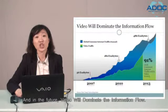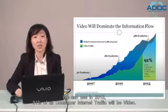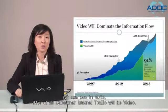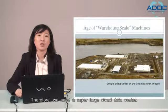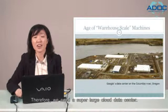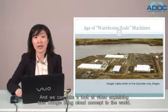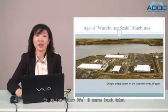In the future, video will dominate the information flow. In 2013, 91% of all consumer internet traffic will be video. Therefore, we need a super large cloud data center. This is an example of a data warehouse of Google. We can take a look at a video explaining how Google brought cloud concepts to the world. Enjoy the video — we'll come back later.